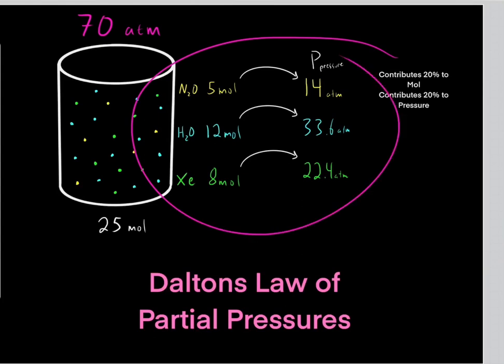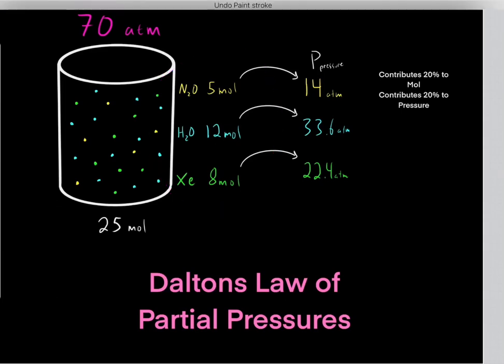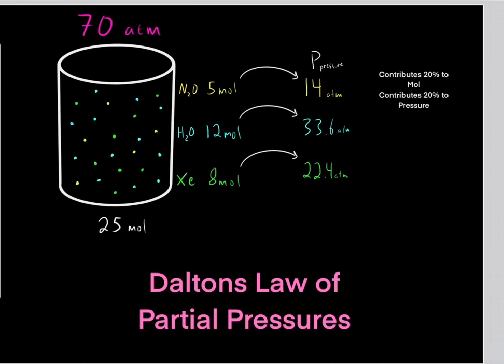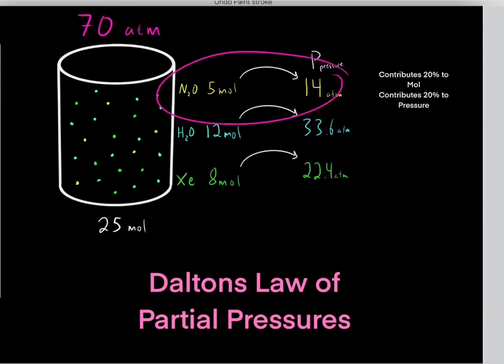This is straightforward and logical. The actual identity of the gas is not important, and each gas is doing its own thing. If we were to magically make the other two gases disappear, this dinitrogen oxide would still contribute 14 atmospheres.